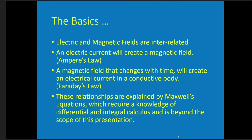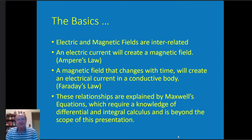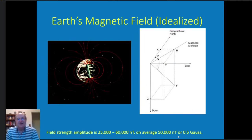An electric current will create a magnetic field — that's Ampere's Law. A magnetic field that changes with time will create an electrical current in a conductive body — that's Faraday's Law. These relationships and two other equations are explained by Maxwell's equations, which require knowledge of differential and integral calculus and is beyond the scope of this presentation. I figure if I went into the calculus everyone would probably drop off fairly quickly.